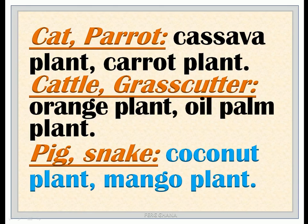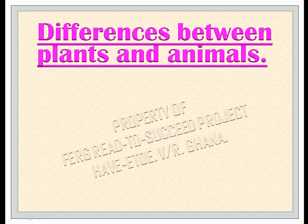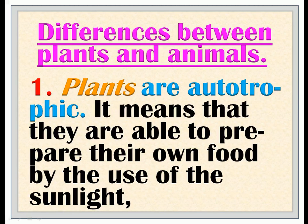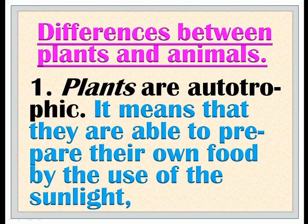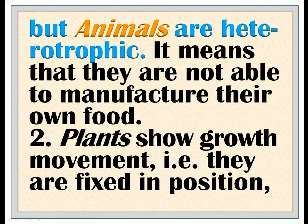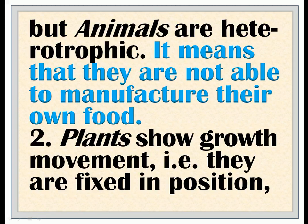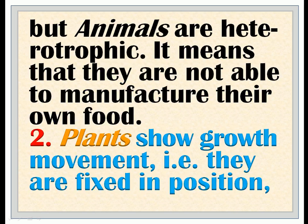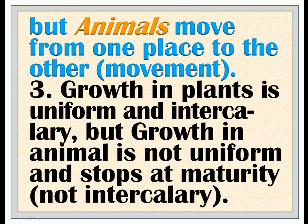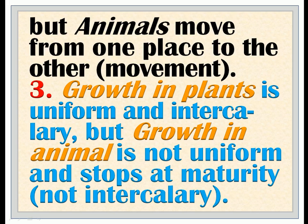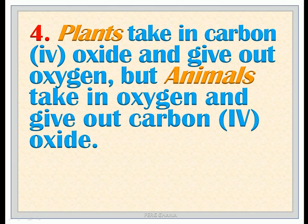Differences between plants and animals: 1. Plants are autotrophic, meaning they are able to prepare their own food using sunlight, but animals are heterotrophic, meaning they are not able to manufacture their own food. 2. Plants show only growth movement as they are fixed in position, but animals move from one place to the other. 3. Growth in plants is uniform and intercalary, but growth in animals is not uniform and stops at maturity. 4. Plants take in carbon dioxide and give out oxygen, but animals take in oxygen and give out carbon dioxide.